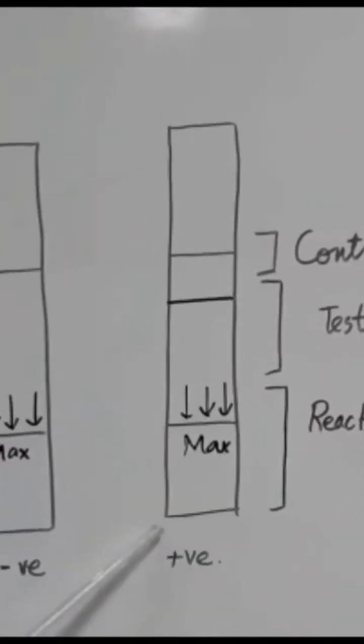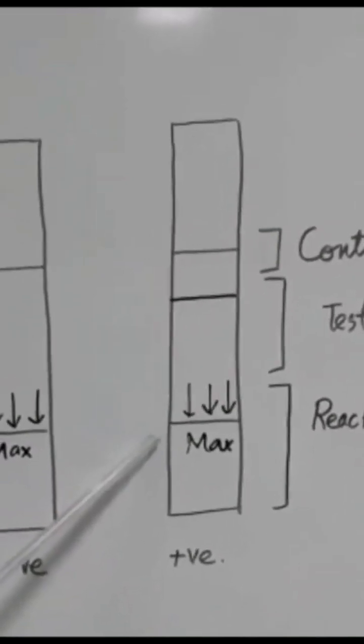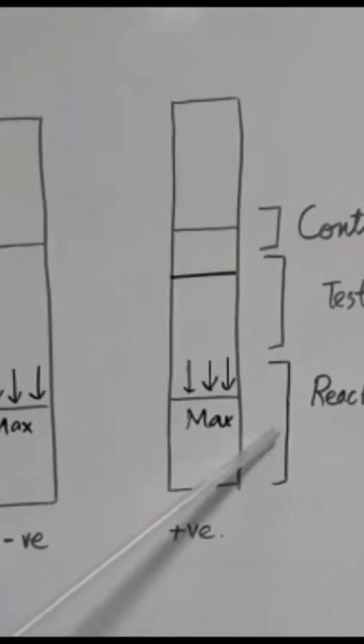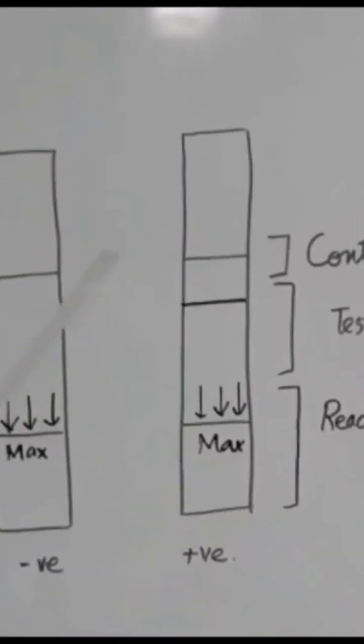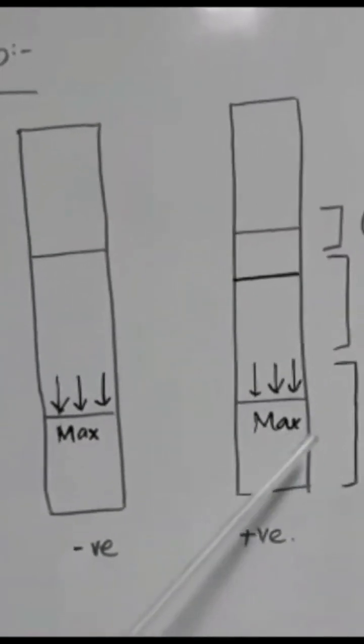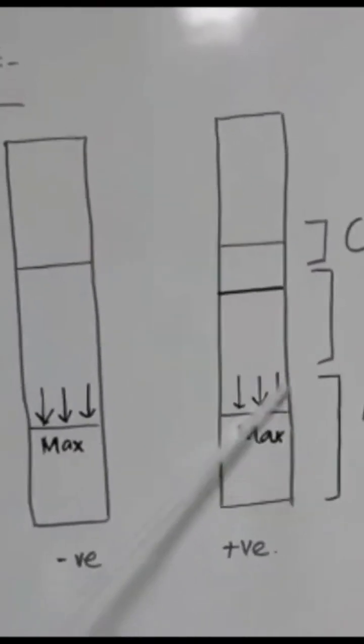When the urine test strip is dipped in the urine sample, the enzymes bind to this antibody. In the absence of HCG in the urine, the enzymes will remain unbound but they will pass along the urine.